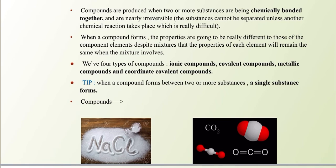Let's talk about a few examples of compounds. For example, NaCl and carbon dioxide, which we use in everyday life. In the process of respiration, oxygen enters our body into our lungs via the pulmonary veins and pulmonary arteries, and carbon dioxide is released from our body. Carbon dioxide forms a double covalent compound. NaCl forms an ionic compound, and you cannot separate the sodium from the chlorine easily — unless another chemical reaction takes place, which is nearly impossible.